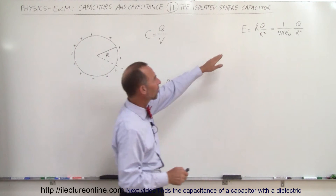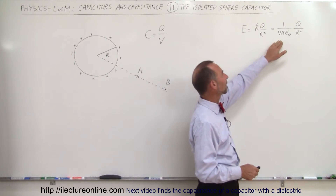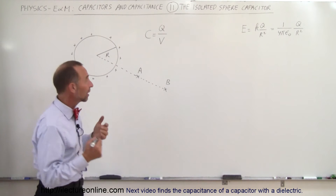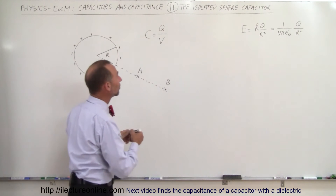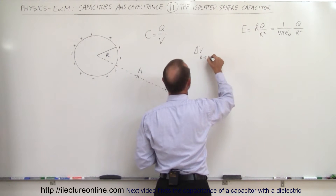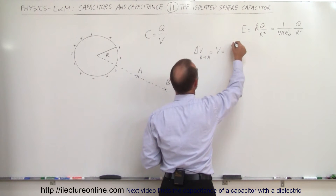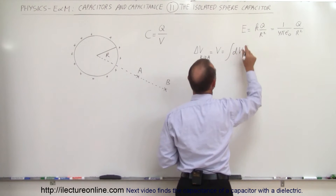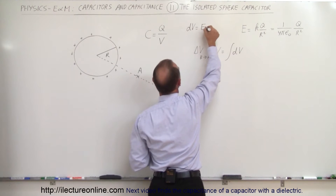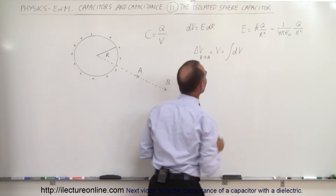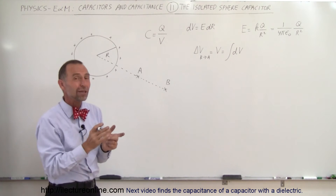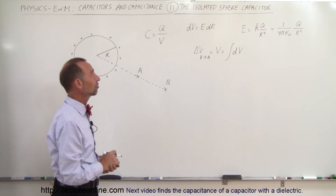The electric field outside will be equal to 1 over 4πε₀ times Q over R squared. If we want to find the potential difference going from B to A, we can say that ΔV going from B to A equals the integral of all the dV's. By definition, dV equals E times dr — since electric field is voltage over distance, but for a varying field we write it as a differential equation.